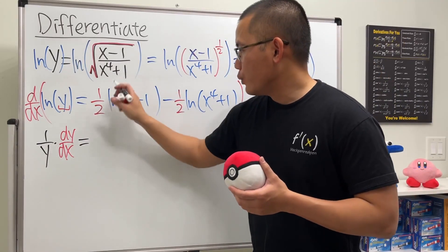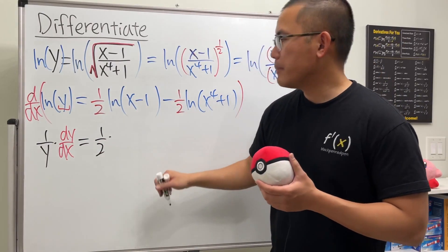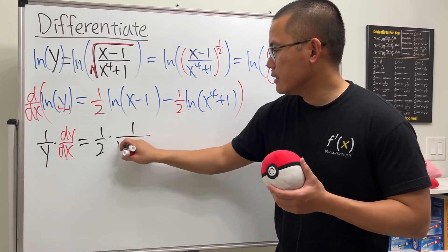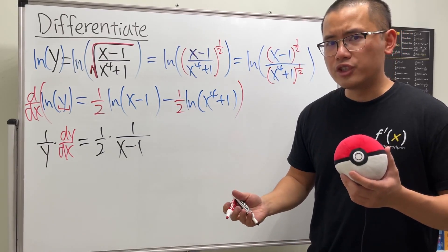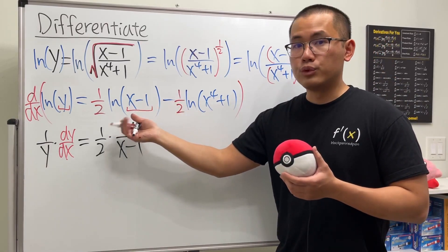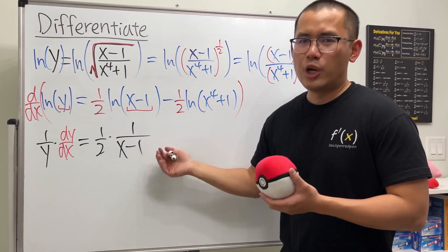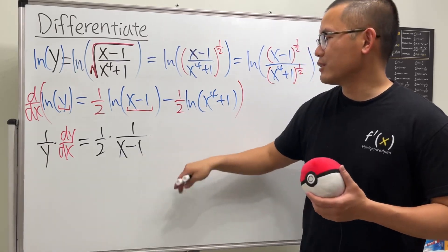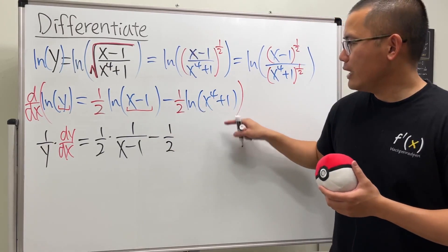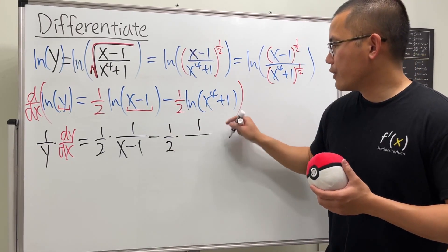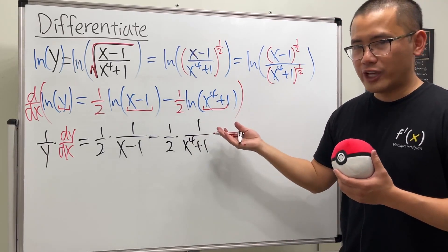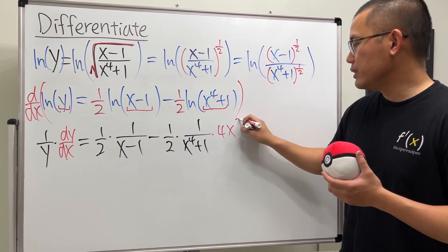For the right side, we first have one-half multiplied by 1 over x minus 1. Do we need the chain rule? Yes — the derivative of the inside is just 1, so the chain rule doesn't change anything here. Then we have minus one-half times 1 over x to the fourth power plus 1, and this time the chain rule gives us 4x to the third power as the derivative of the inside.